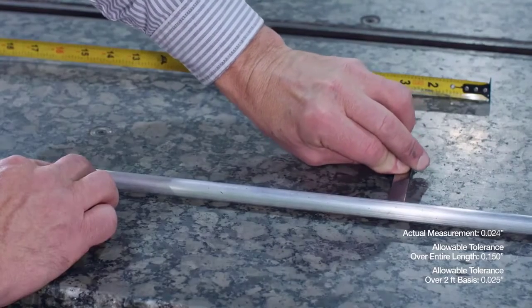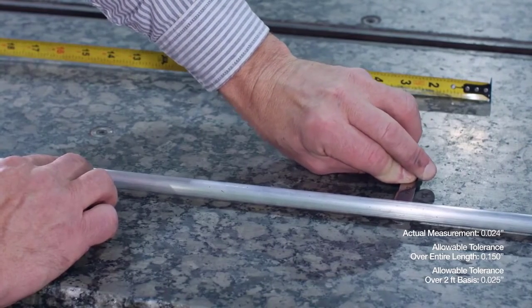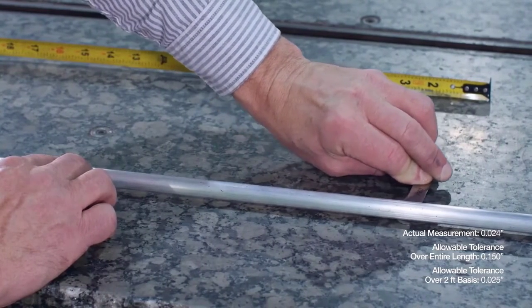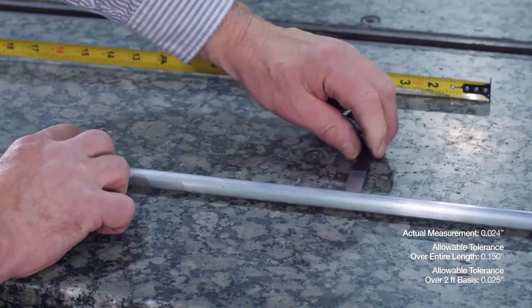The twenty-four thousandths of an inch measured gap is within total length tolerance of one hundred and fifty thousandths of an inch, as well as within the allowable twenty-five thousandths of an inch straightness tolerance over a shorter two-foot distance.